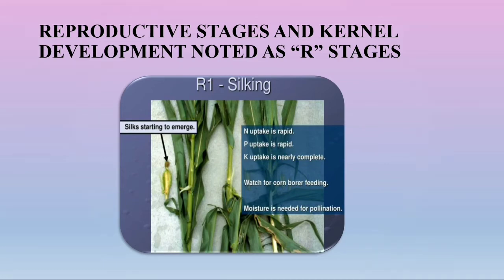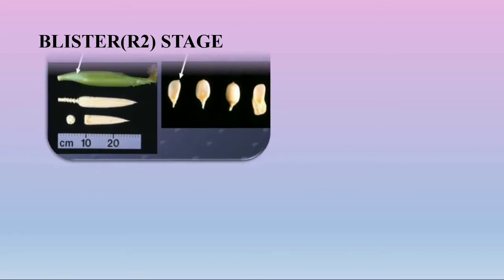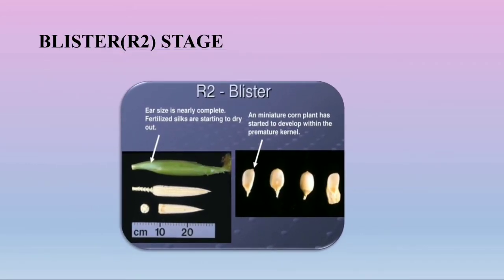Coming to the blister stage (R2): the ear size is nearly complete and the fertilized silks are starting to dry out. The blister stage occurs 10 to 14 days after silking. The kernels are small and watery. The silks are browning and dry, and will be darker under heat and water stress. Irrigation and good soil moisture are still critical for grain fill. Starch begins to accumulate in the kernel. Continue to check for bank grass mites at this stage.